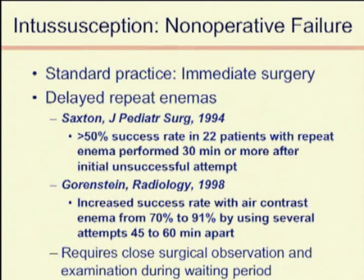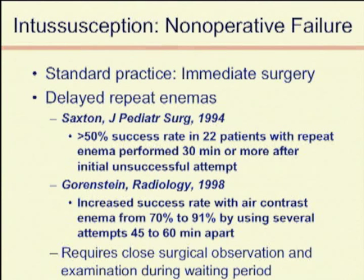So when do you take a kid to the operating room? Non-operative failure is the first indication. If it cannot be reduced, a failure of non-operative means leads to operative means. For recurrent intussusception, there is evidence that you can try again — we've tried up to three or four times, and there's really no evidence suggesting an absolute limit. What we do know is that each time a child re-presents, their chances of having a pathologic lead point go up, and eventually you'll have to make that decision. For most surgeons, sometime around three reductions, you would consider the operating room.